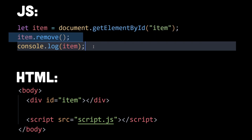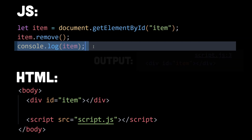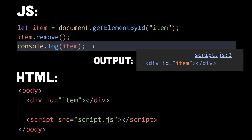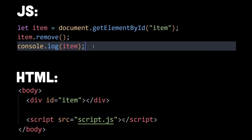In this example, the item variable initially holds a reference to a DOM element. When you remove the element from the DOM using the remove method, you might assume it's gone, but the reference in item still exists. You can see in the console that the item variable still holds the element despite it being removed from the DOM — the element is now a detached DOM element. As long as item retains a reference to the element, it remains in memory even though it's no longer part of the document, causing a memory leak.